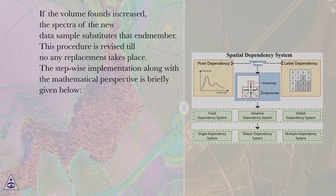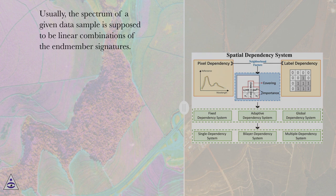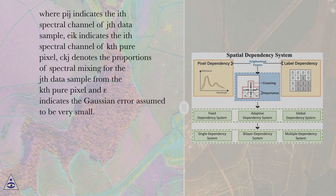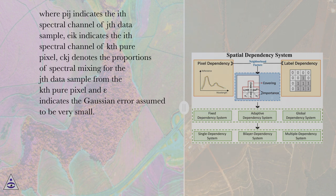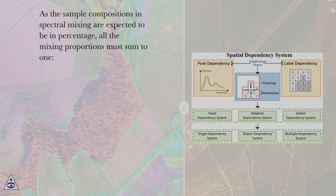The stepwise implementation along with the mathematical perspective is briefly given below. Usually, the spectrum of a given data sample is supposed to be a linear combination of the N-member signatures, where P_ij indicates the i-th spectral channel of the j-th data sample, E_ik indicates the i-th spectral channel of the k-th pure pixel, C_kj denotes the proportions of spectral mixing for the j-th data sample from the k-th pure pixel, and epsilon indicates the Gaussian error assumed to be very small. As the sample compositions in spectral mixing are expected to be in percentage, all the mixing proportions must sum to 1.